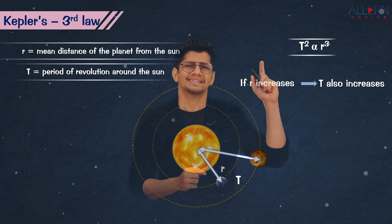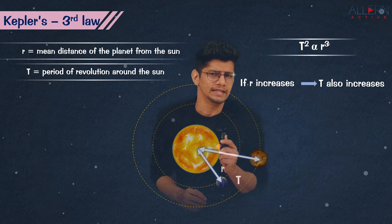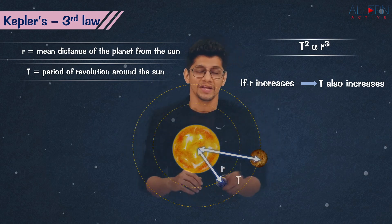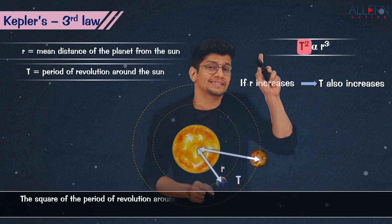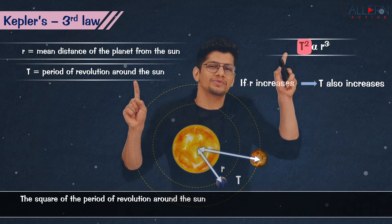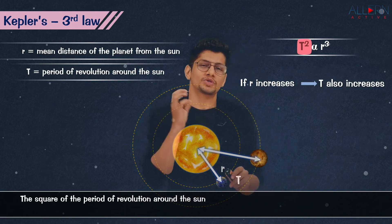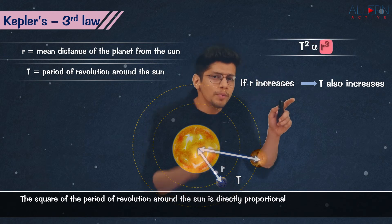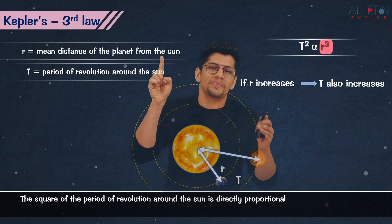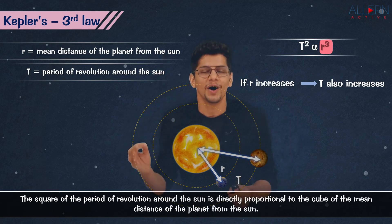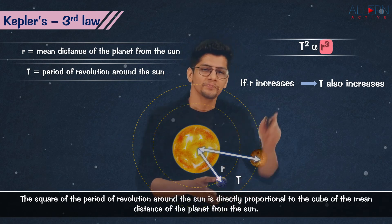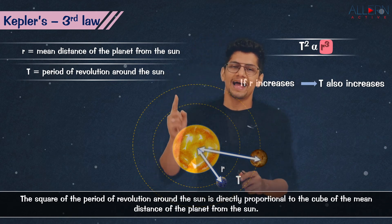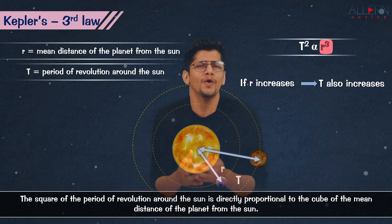To state the third law: capital T is the period of revolution around the Sun, and small r is the mean distance of the planet from the Sun. Therefore, the square of the period of revolution around the Sun is directly proportional to the cube of the mean distance of the planet from the Sun — that is Kepler's third law.